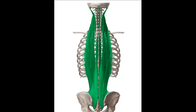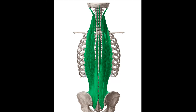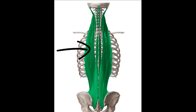Moving on to the muscles of the back, you have the erector spinae muscles that run through the entire length of the back. There are three muscles: the spinalis, the longissimus thoracis, and the iliocostalis thoracis.